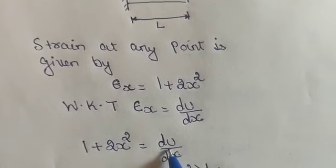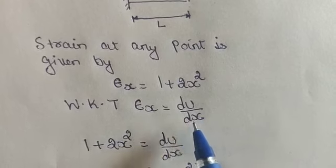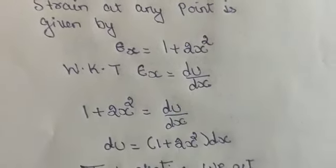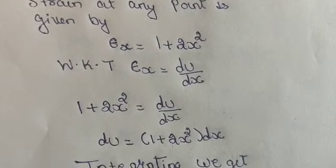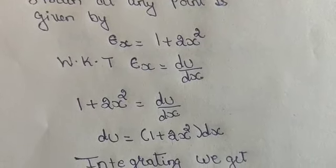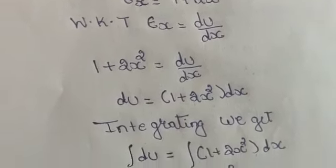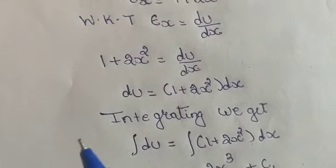du by dx. Instead of this epsilon x, we will substitute 1 plus 2x squared. That will be equal to du by dx. Now we will cross multiply this. This equation becomes du equals 1 plus 2x squared into dx.